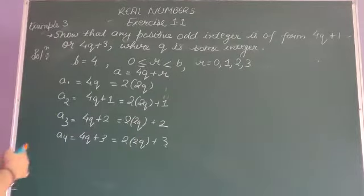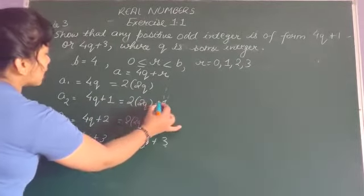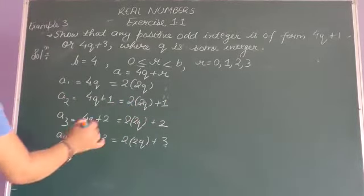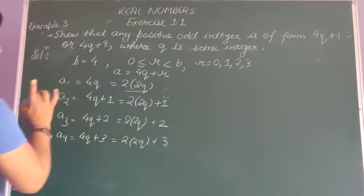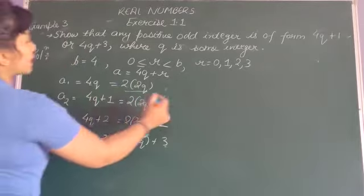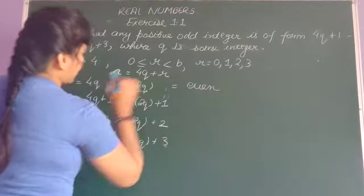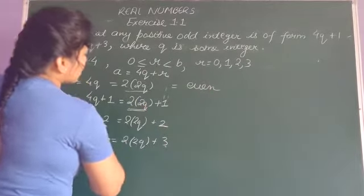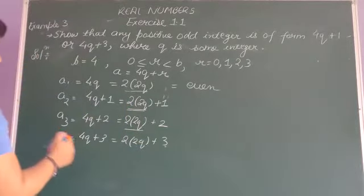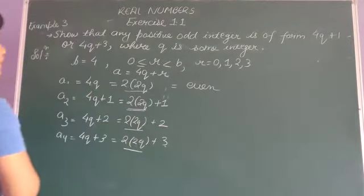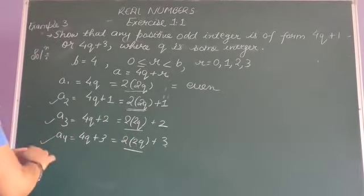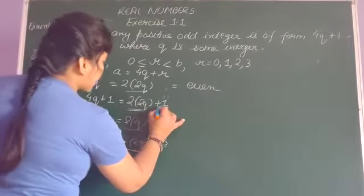अगर आपने गौर किया होगा तो देखिए, मैंने 2 को किसी भी number को कुछ भी नहीं किया है। बस मैंने 4Q की जगह पर 2 multiplied by 2Q लिख दिया है। अब देखिए, इसमें हमारे पास A की value है। और अगर मैं 2 को किसी भी number से multiply करती हूँ, हमारे पास even integer आएगा। अब इसका जो first term है वह भी even है। A3 में भी जो first term है वो even है। A4 में जो first term है वो भी even है। अब यह A2, A3, A4 even हैं या odd हैं — यह किस पर depend करेंगे? आपके second term पर।